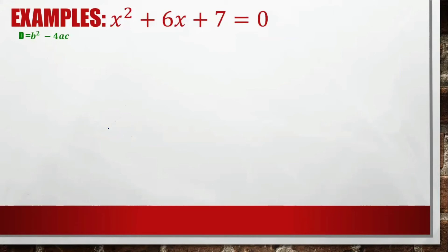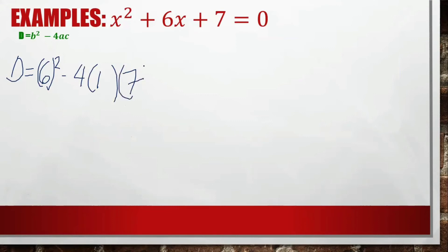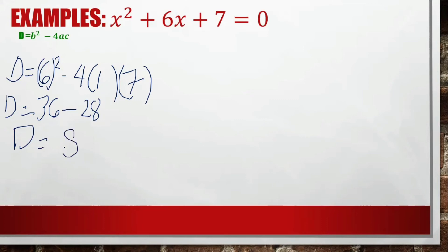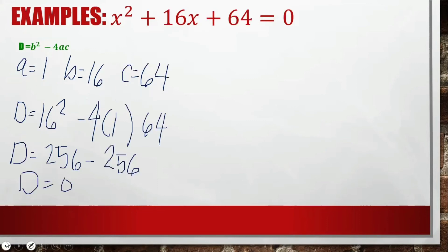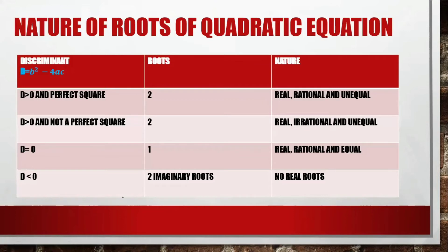Example 2: x² + 6x + 7 = 0. Using d = b² − 4ac with a = 1, b = 6, c = 7: d = 6² − 4(1)(7) = 36 − 28 = 8. Since the discriminant is positive 8 and not a perfect square, there are two real, irrational, and unequal roots.